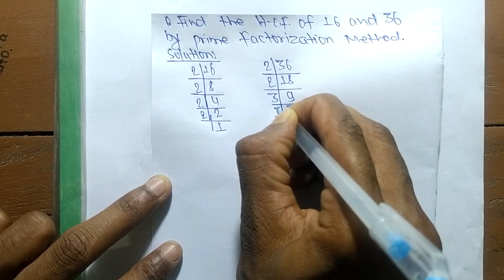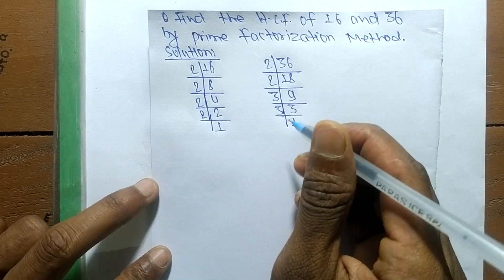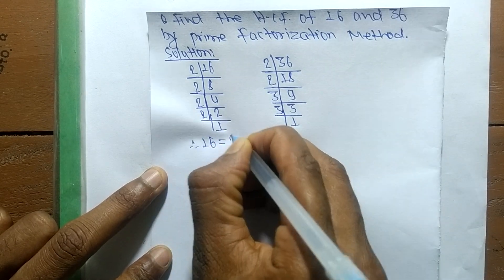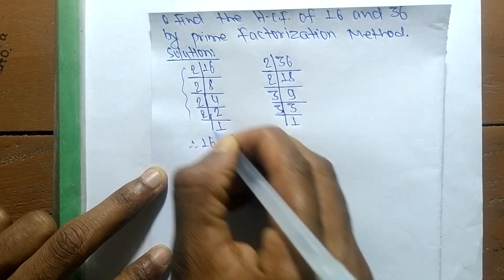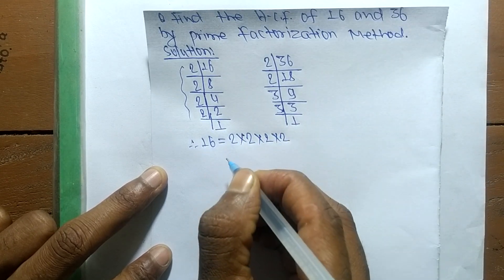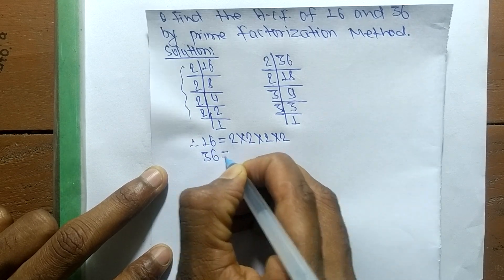So from these prime factors we can write: 16 is equal to 2 times 2 times 2 times 2. In the same way, the prime factors of 36 is equal to 2 times 2 times 3 times 3.